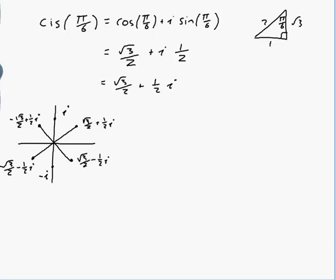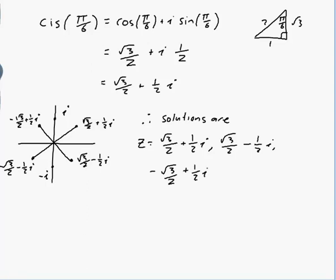So therefore solutions are z equals root 3 on 2 plus half of i, root 3 on 2 minus half of i, minus root 3 on 2 plus half of i, minus root 3 on 2 minus half of i, and i and minus i. Excellent. All done.